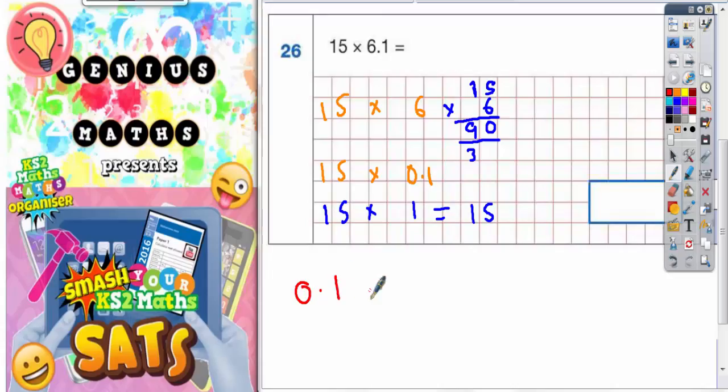So 0.1 is 10 times smaller than one whole one. So if we're timesing 15 by 1 to get 15, timesing it by something that's 10 times smaller is going to make the answer 10 times smaller than 15.